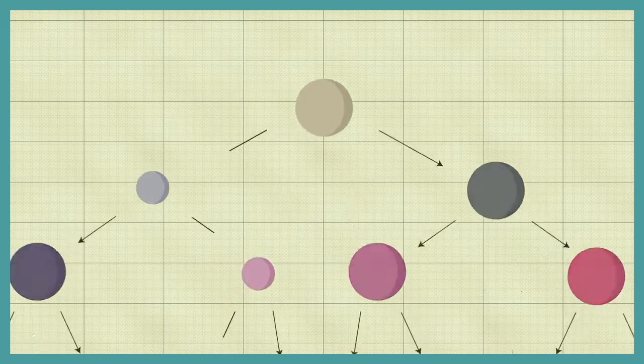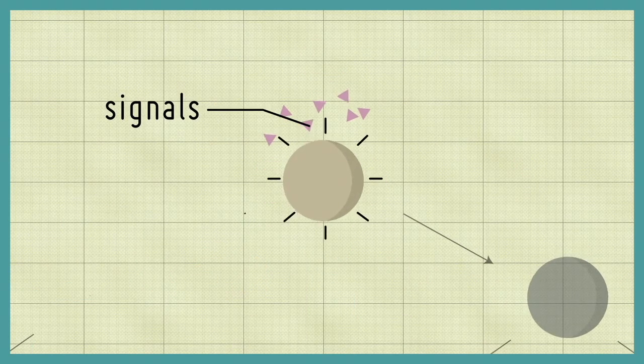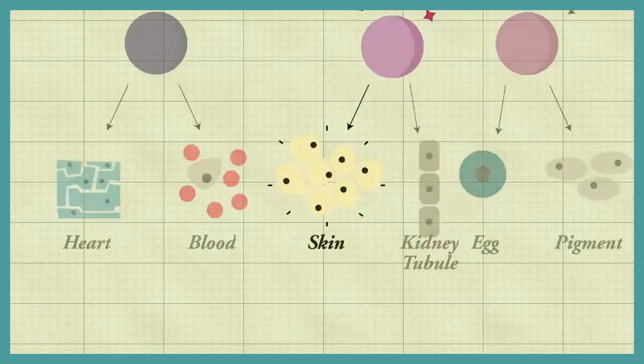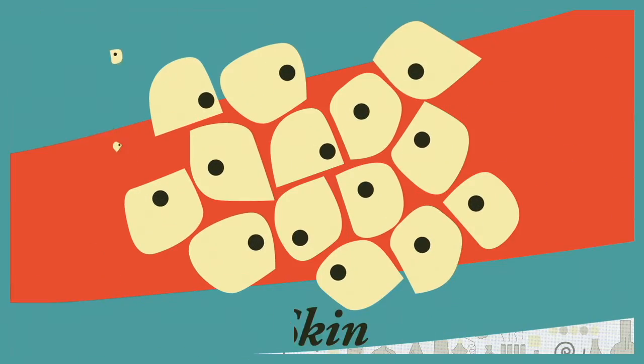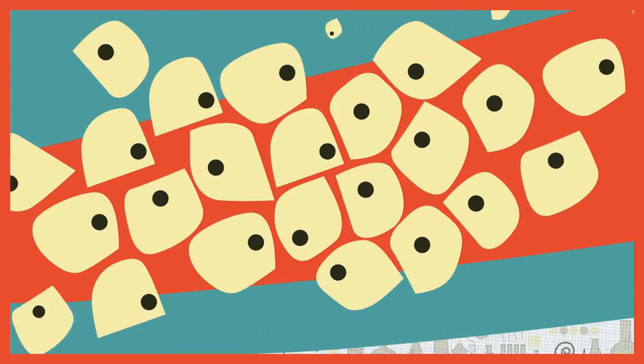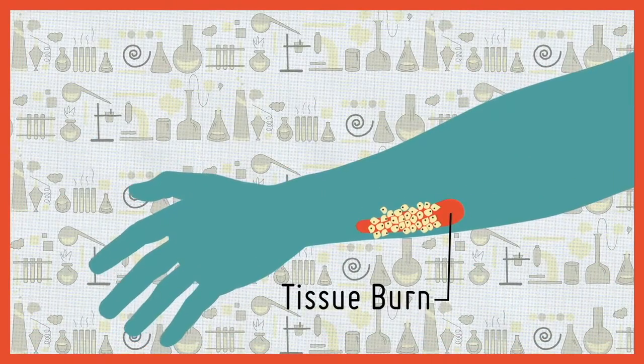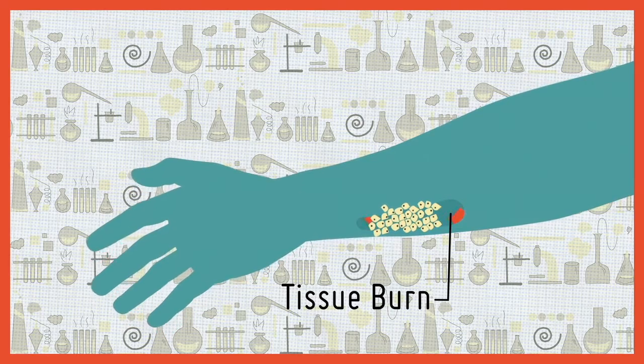By studying the signals required to control how ES cells develop into specific cell types, scientists may be able to develop therapies capable of restoring damaged tissues.